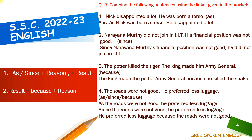Third example: the potter killed the tiger. The king made him army general. Using 'because' — what is the result? The king made him army general. So we write result first: the king made the potter army general because he killed the tiger.